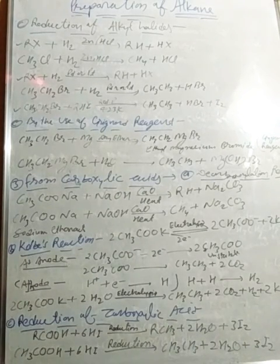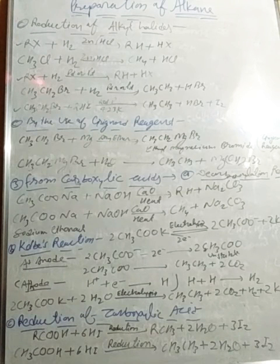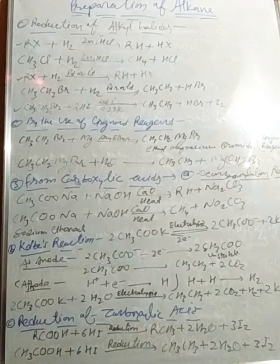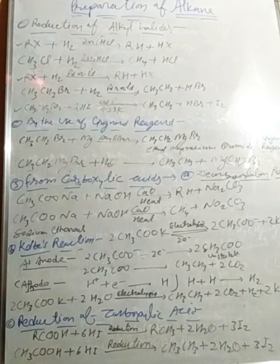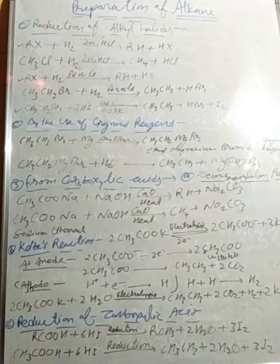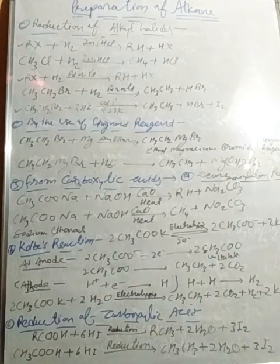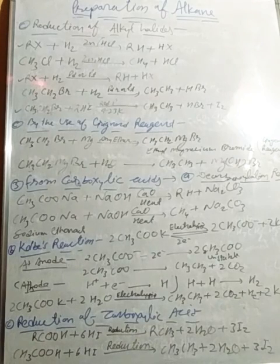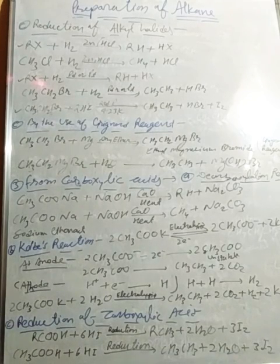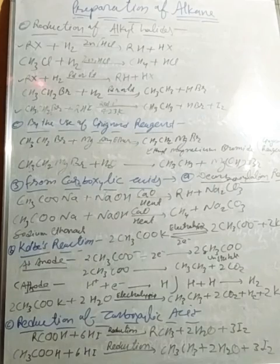In this video we studied about the preparation of alkane using different methods: reduction of alkyl halides, use of Grignard reagent, from carboxylic acids using Kolbe's reaction, and reduction of carboxylic acids. I hope you have understood all these topics. Thank you for watching, and please share, subscribe, comment, and like my channel.